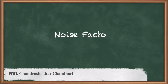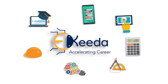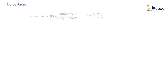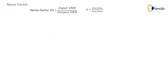As we calculate the signal to noise ratio, we are going to learn about the noise factor. Noise factor is the ratio of input SNR divided by output SNR, abbreviated as capital F. The formula is: F equals PSI over PNI, divided by PSO over PNO.